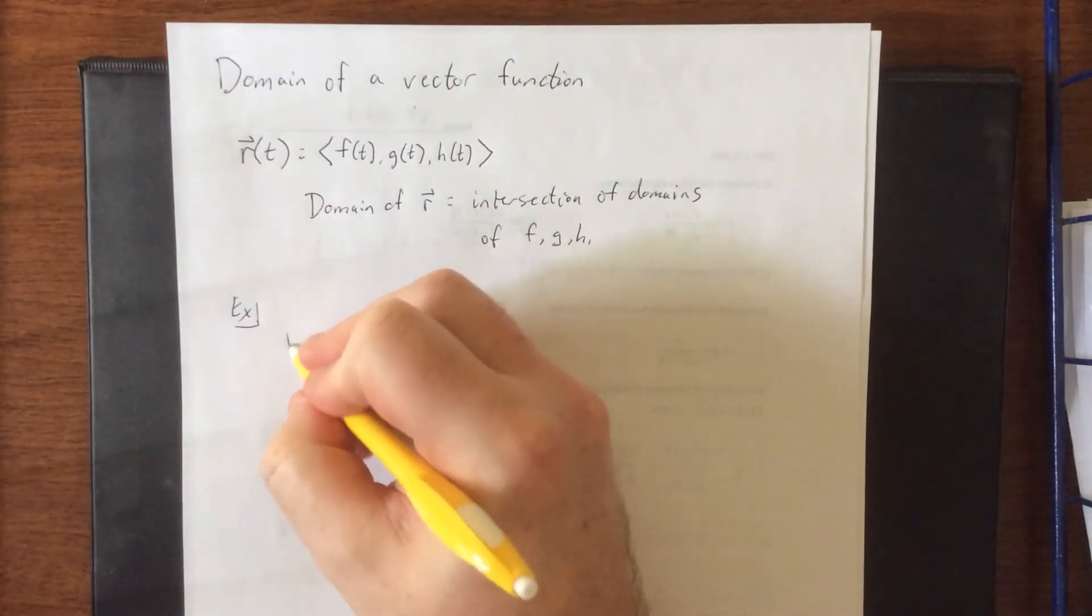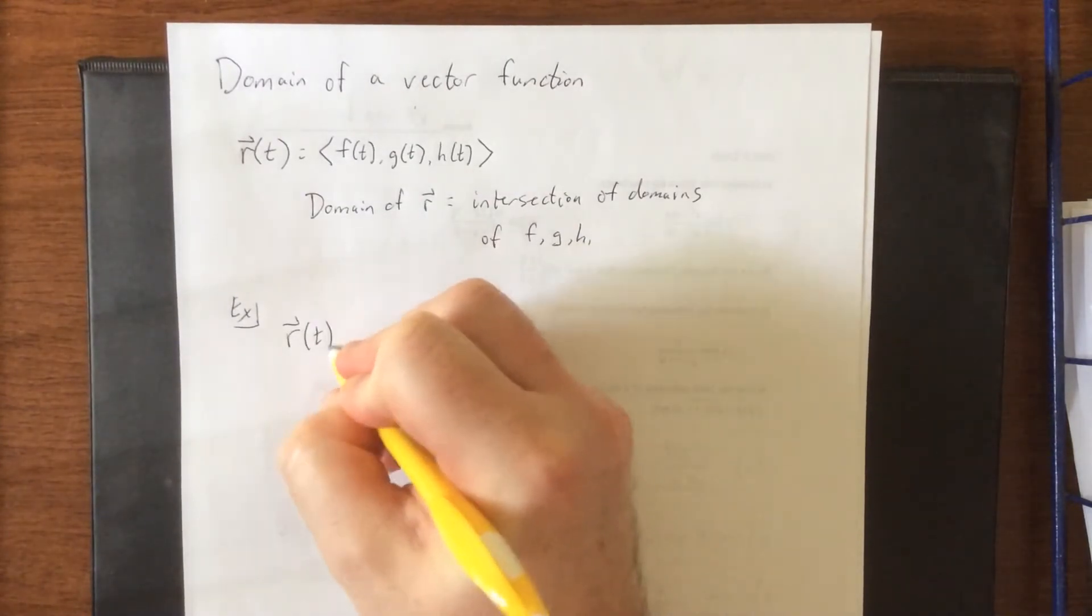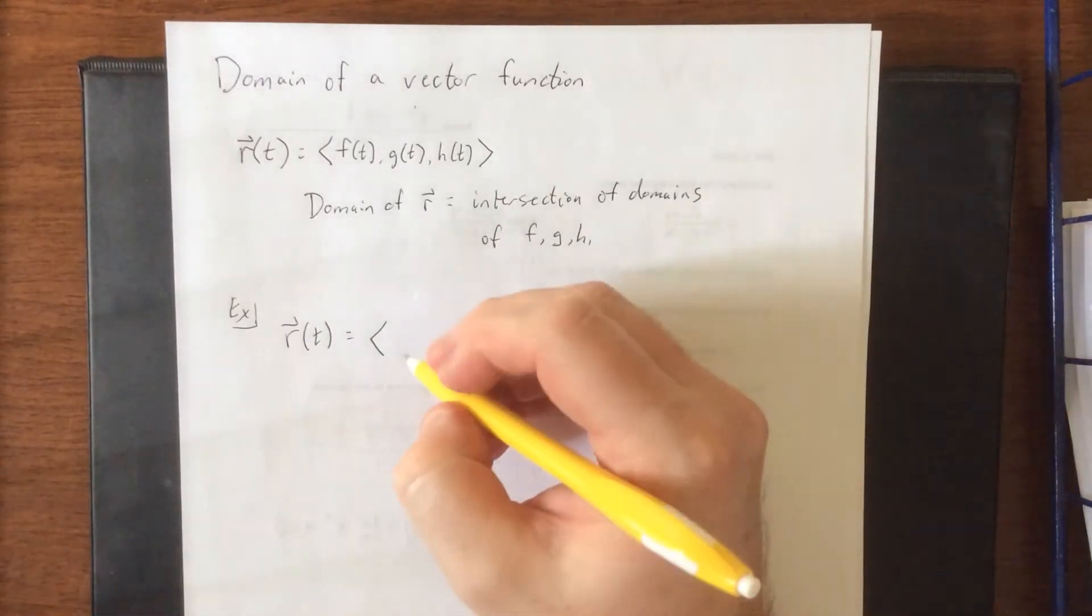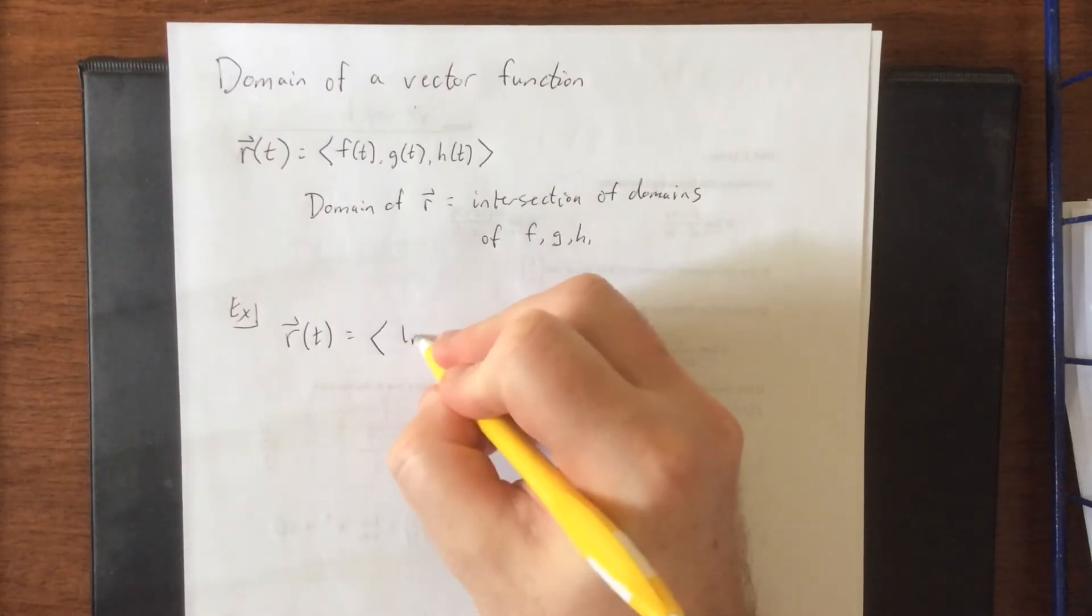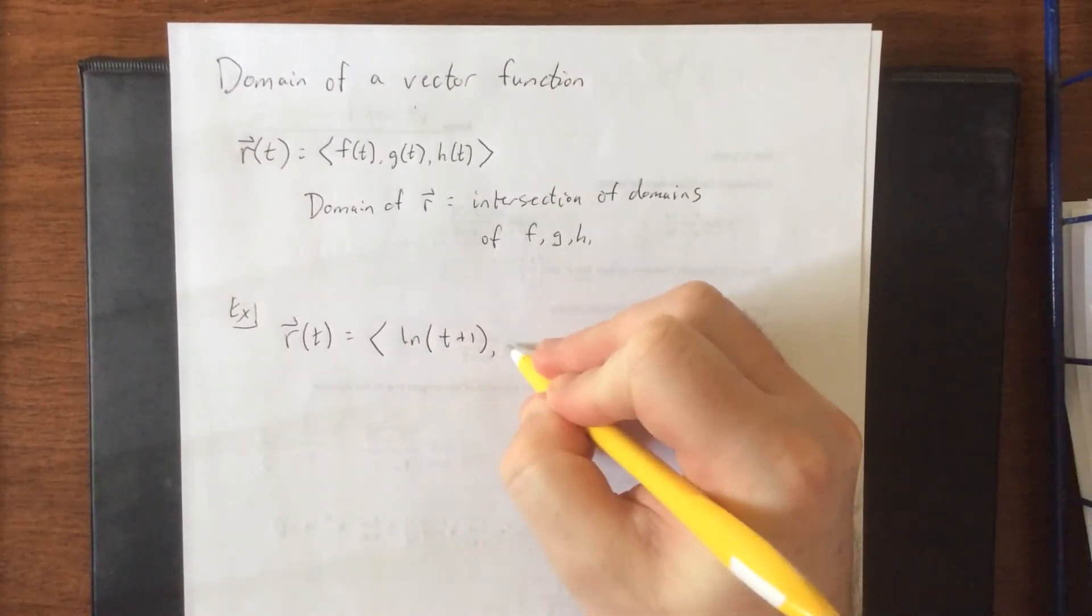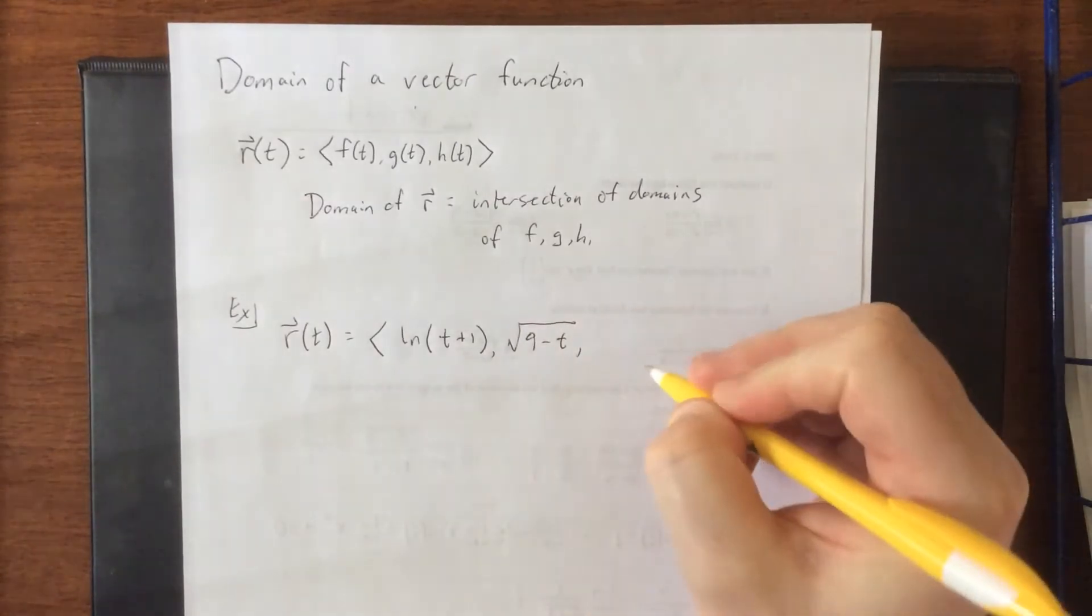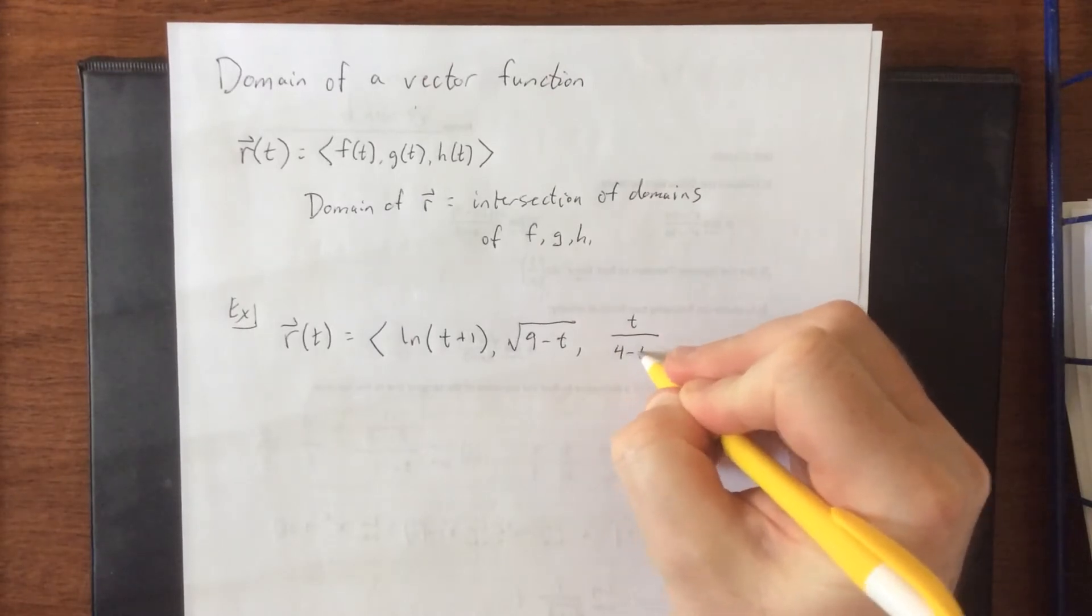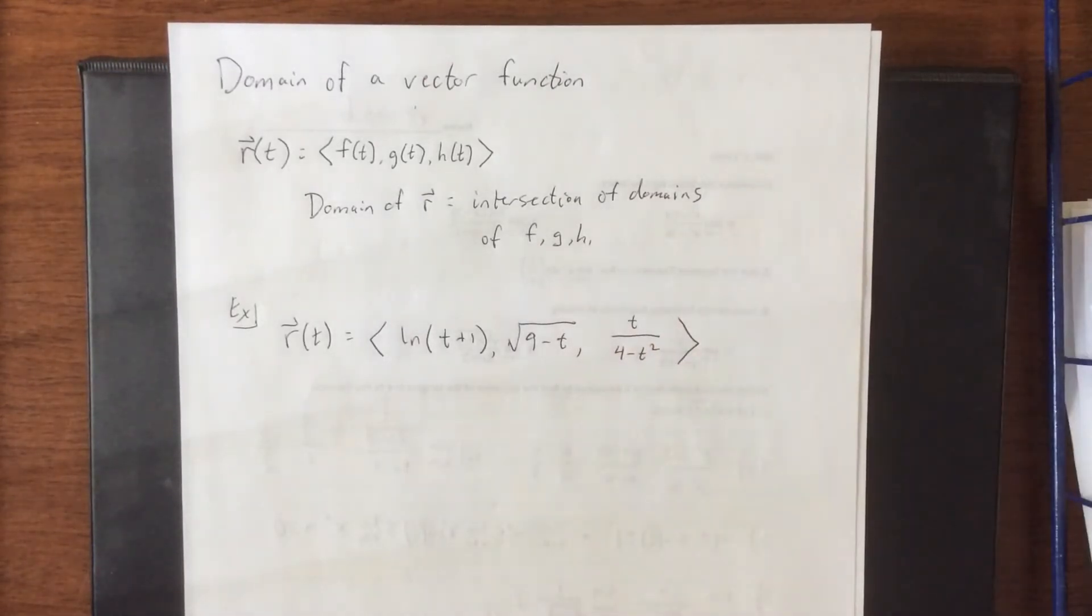So as an example of something like this, let's go with something that has a lot of domain restrictions. So three big ones to look for are denominators, square roots, and logarithms. So we'll throw all three of these in here. We'll say natural log of t plus 1, the square root of 9 minus t, and then t divided by 4 minus t squared. So three different kinds of domain issues associated with this.